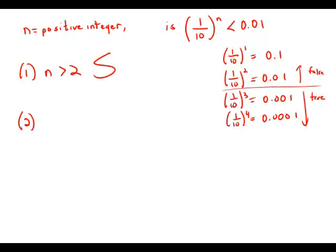Statement number 2, a little bit trickier. What we get is (1/10)^(n-1) less than 0.1. What I'm going to do is say, let's take this equation and multiply both sides by 1/10.